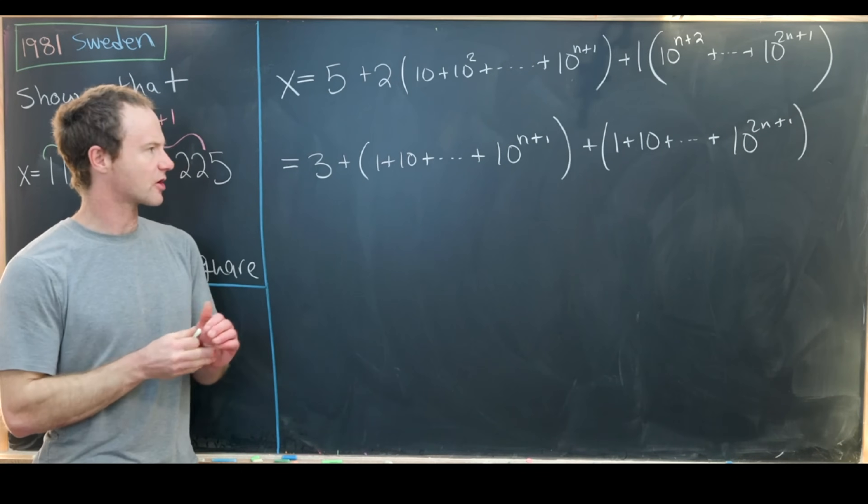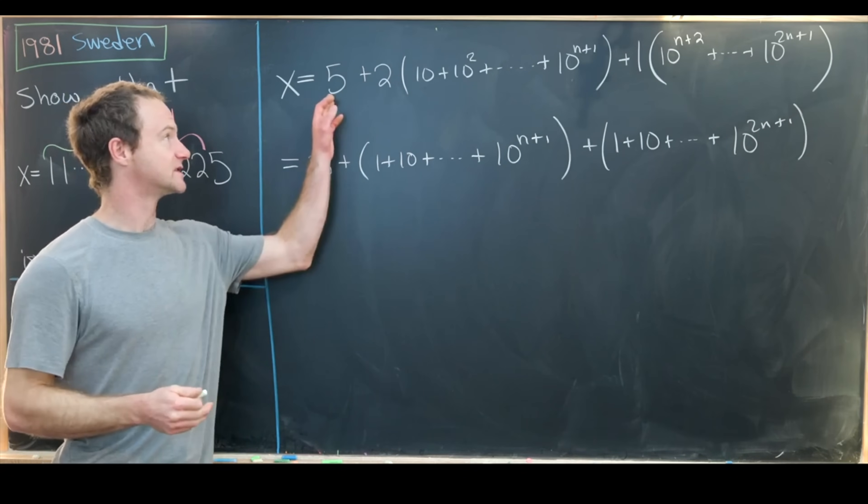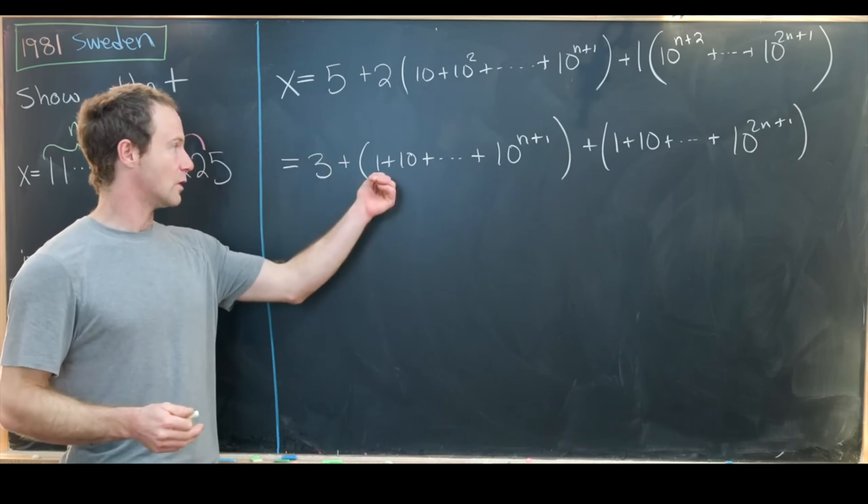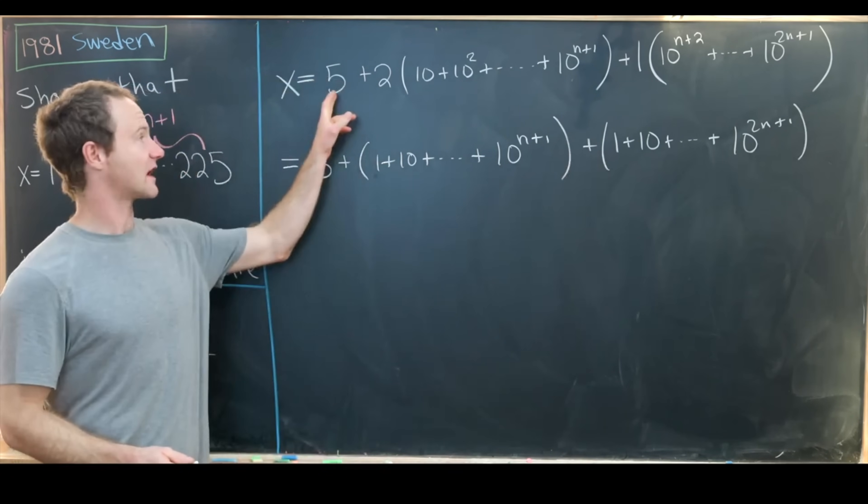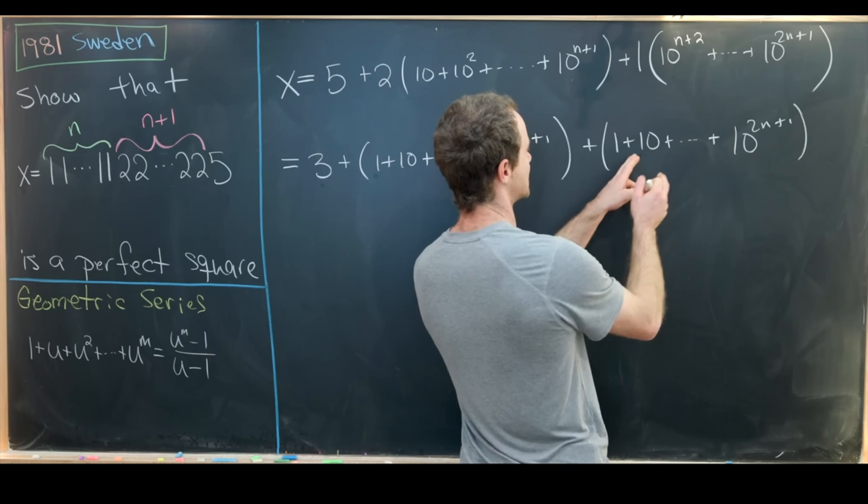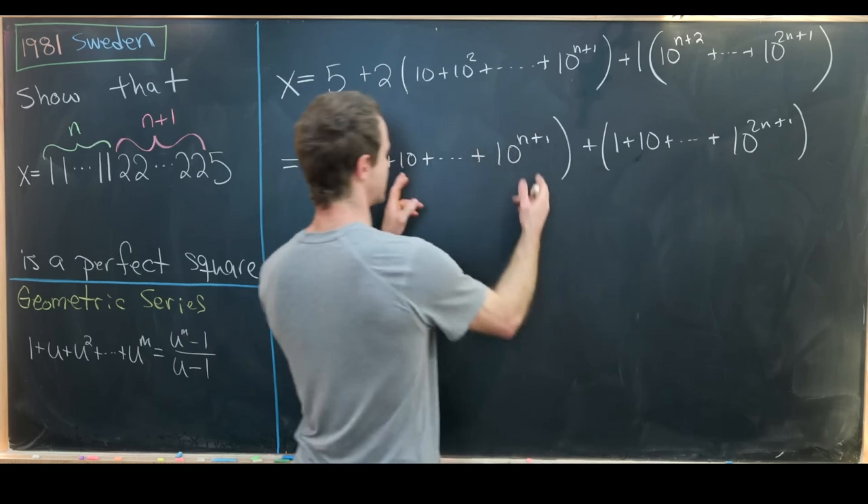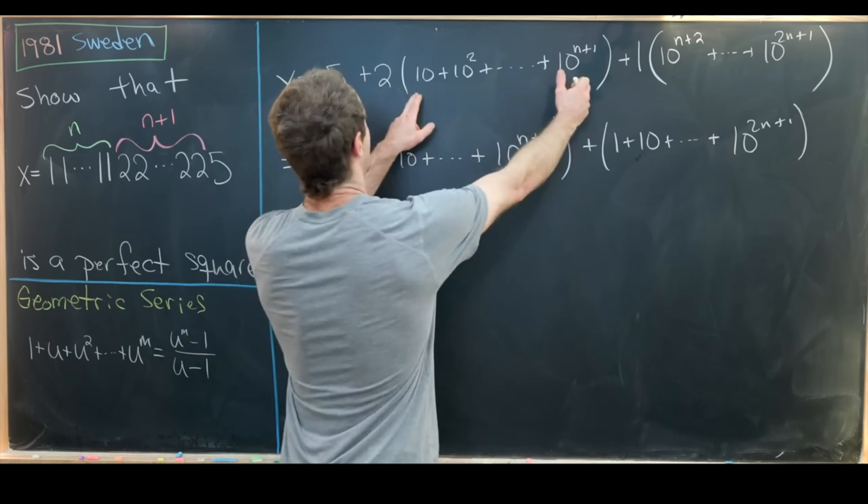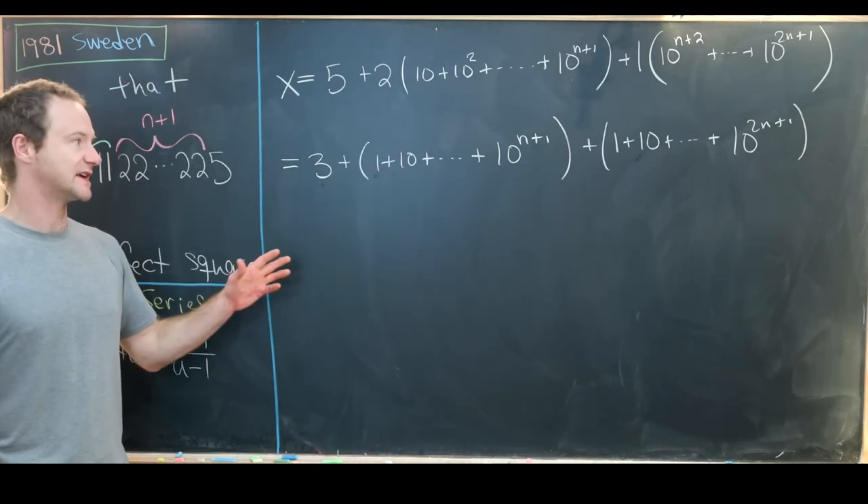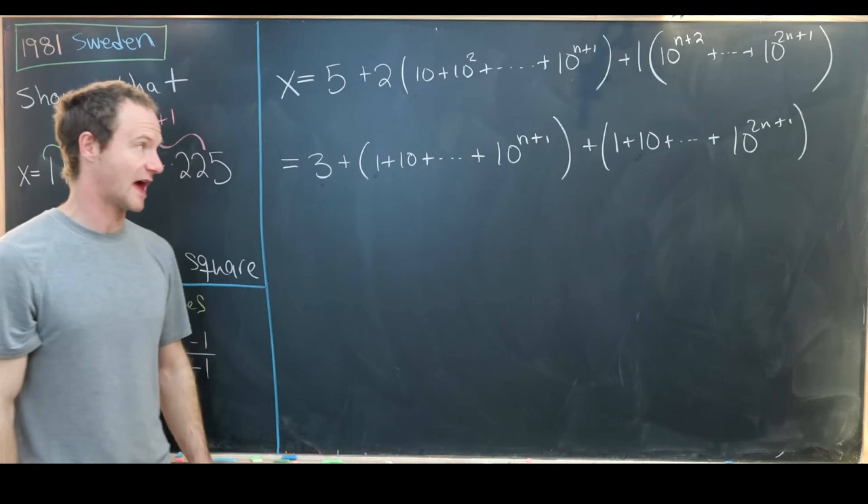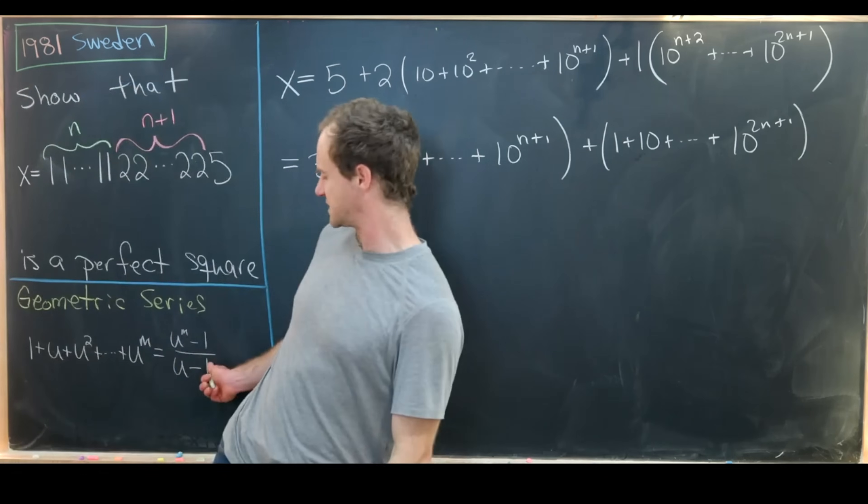Okay, so let's talk through how this combines to what we have up here. Well, we can take each of these ones and add it to 3 and that'll give us 5. We'll take the terms from 10¹ to 10^(n+1), add them with these, and we'll get 2 copies of that. Okay, we've carefully rewritten this as geometric series that start at 1, which means we can use this directly.